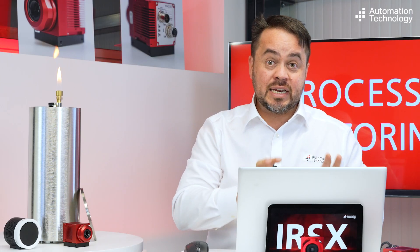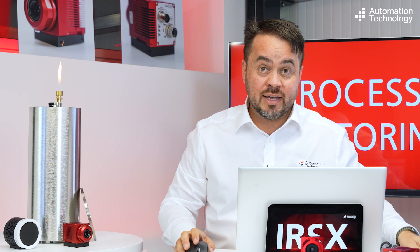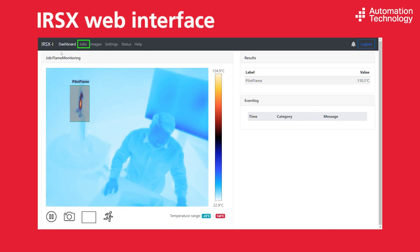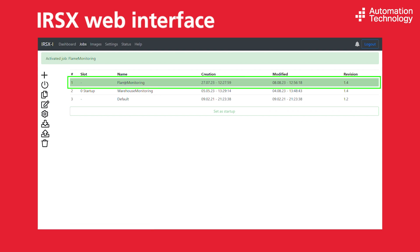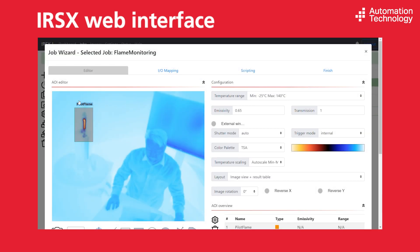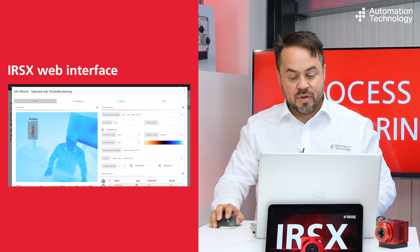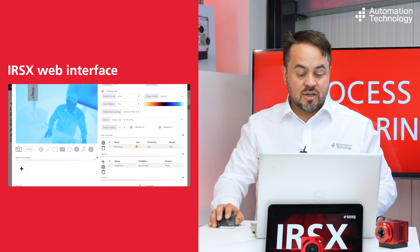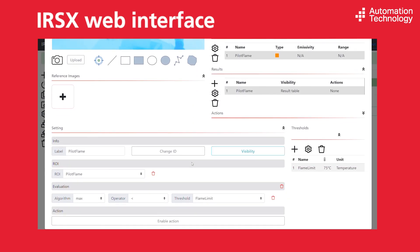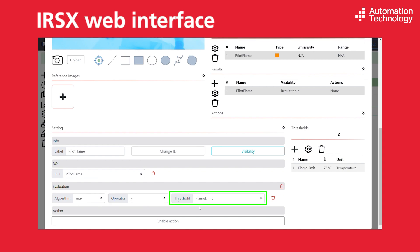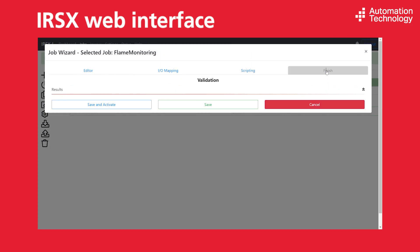So now we will see how easy it is to configure the solution directly in the camera. We have created a job called 'flare monitoring,' and in this job what we have done is configure an area of interest that we have called 'pilot flame.' To this area of interest, we have linked the function where we are monitoring the maximum temperature. If it is colder than a flame limit — this threshold flame limit now has the value of 75 degrees C — then if this condition is valid, we will raise an alarm.